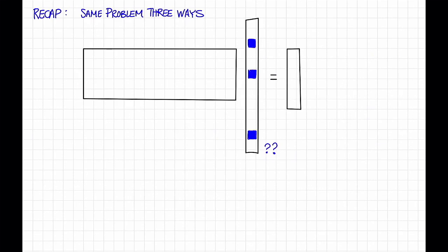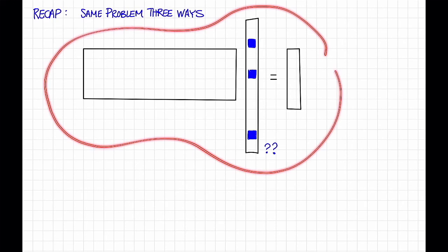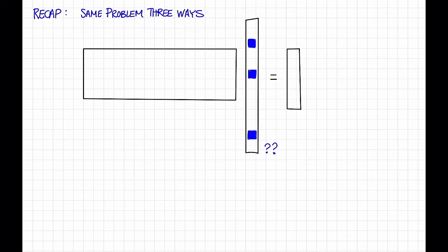To recap, we saw this same problem three different ways. That is, the problem is, given the output of a short fat matrix times a long sparse vector, and given a description of the matrix, recover the long sparse vector. We saw that, over a finite field,